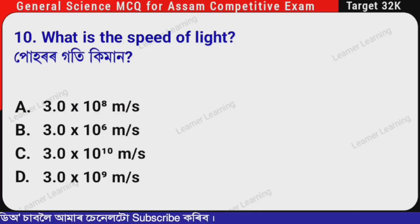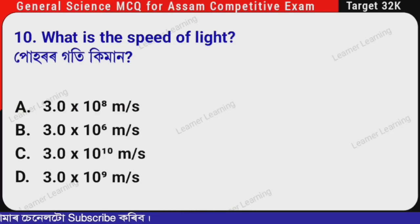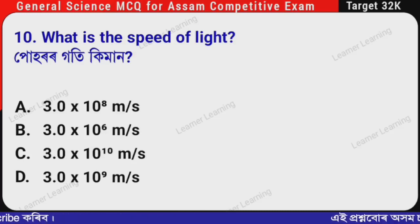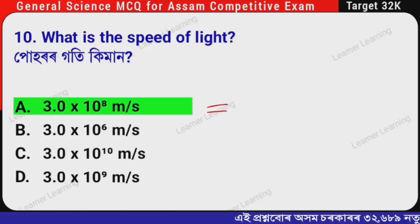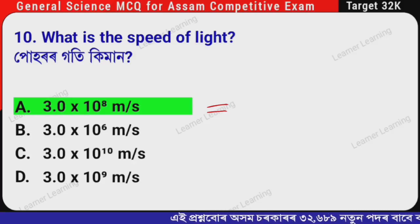Next question: What is the speed of light? (Assamese: Pohar or goti ki man?) The correct option is Option A — 3.0 × 10⁸ meters per second. The speed of light is 3.0 × 10⁸ m/s.